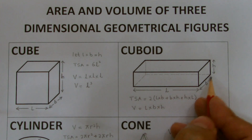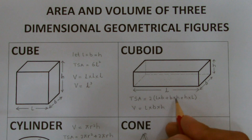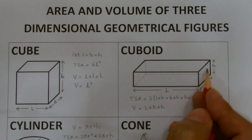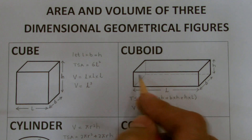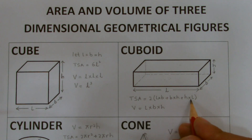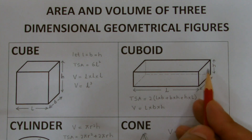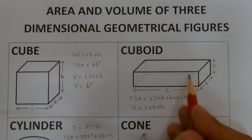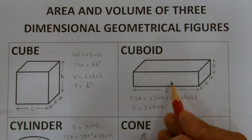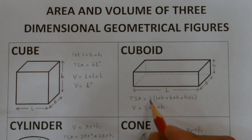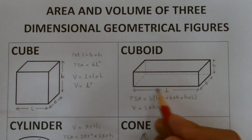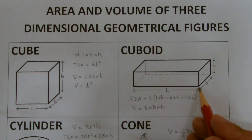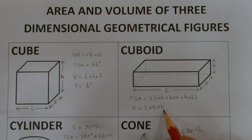When I multiply length and breadth I get the area of the base or top. When I multiply breadth and height I get the area of the front or back. When I multiply height and length I get the area of one side. Summing these up and multiplying by two gives the total surface area. For volume, I simply use length × breadth × height, which gives the volume of the cuboid.